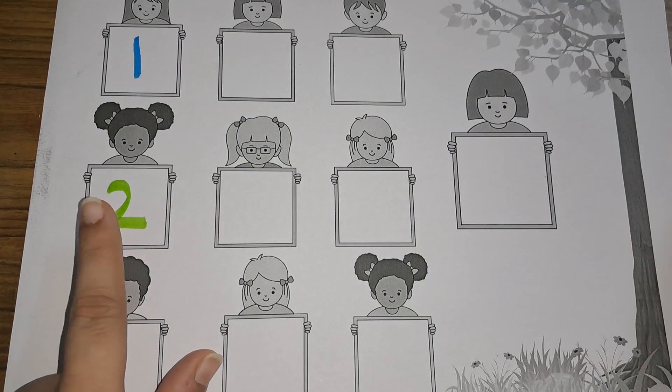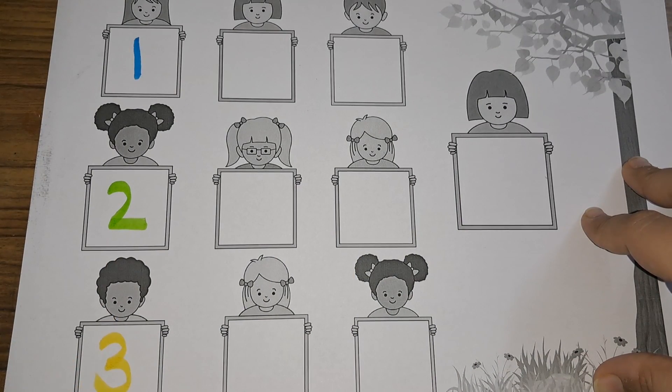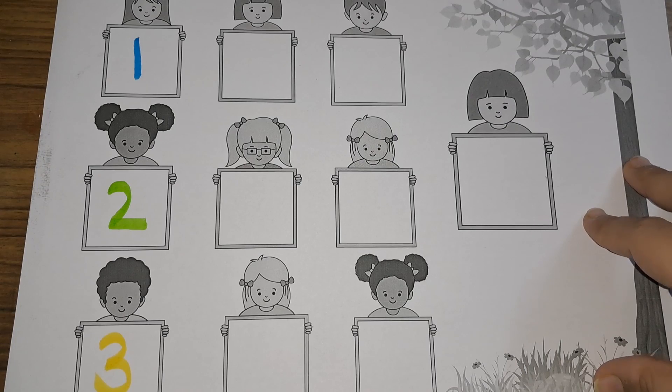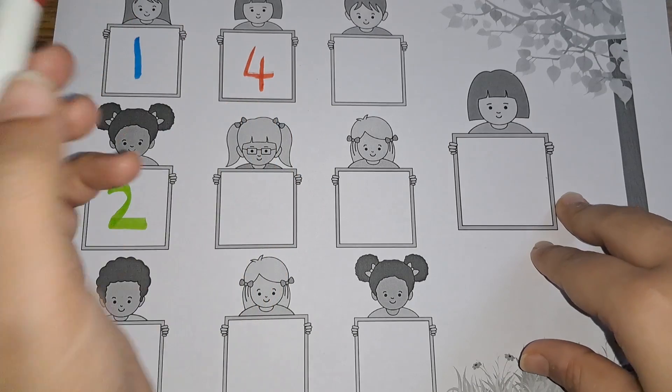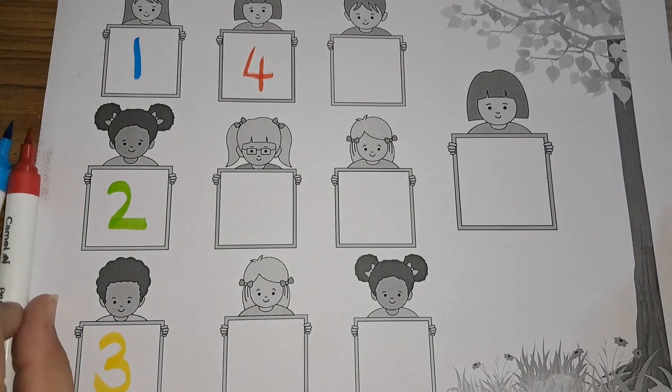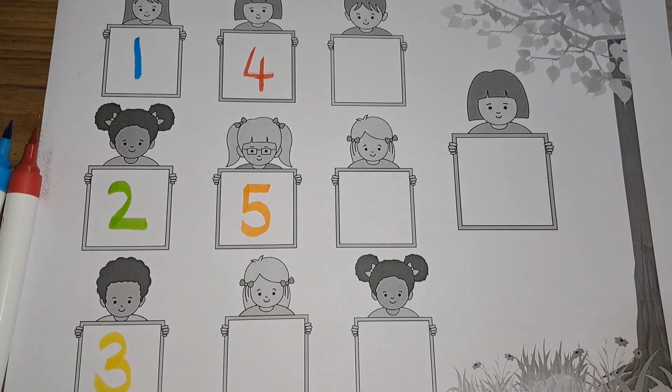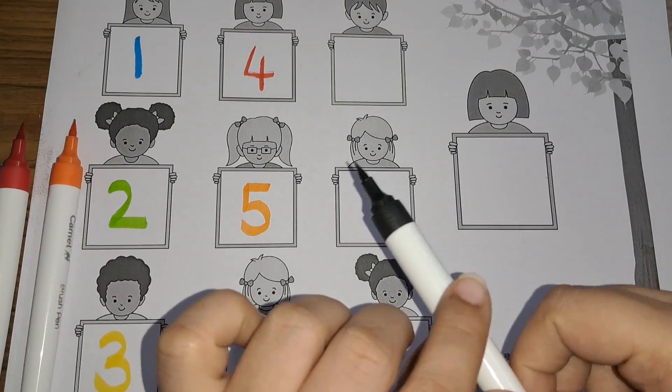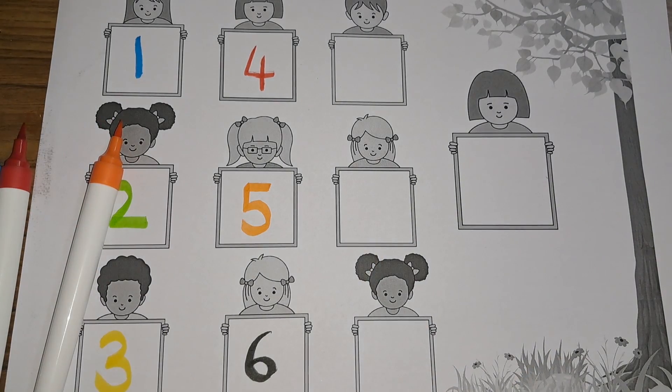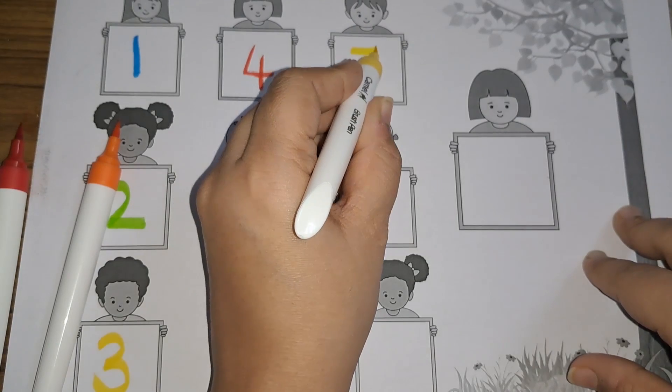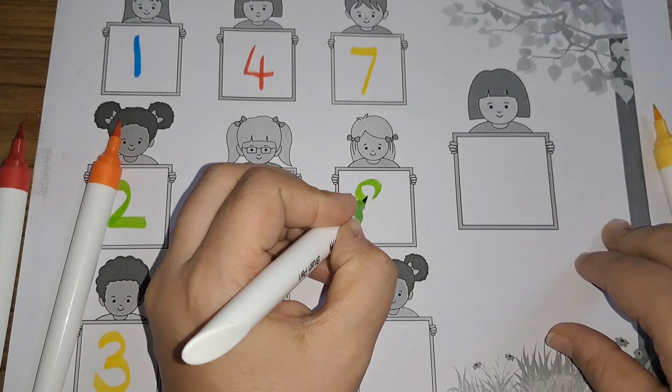T-W-O, two. Three, T-H-R-E-E, three. Four, F-O-U-R, four. Five, F-I-V-E, five. Six, S-I-X, six.